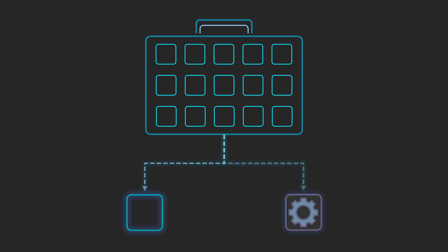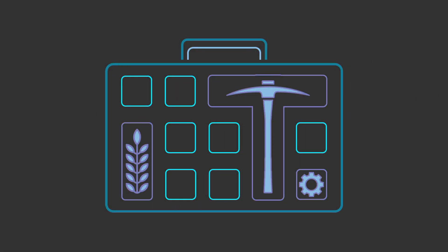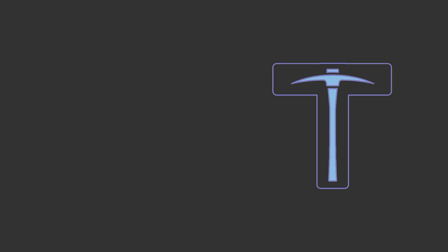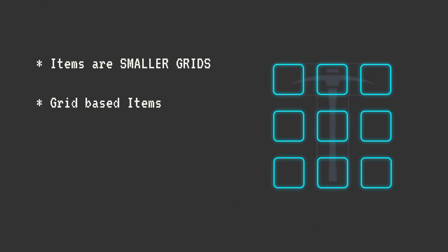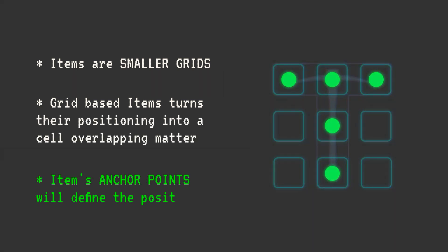Now that we have a dynamic grid, it's time to focus on items. There are a few key things to consider: not every item fits into a single cell — some might take up two, others three, and some might even have irregular shapes. On top of that, certain items can be combined, and every item must be able to rotate. Because of this, an item can also be thought of as a smaller 3D grid. This helps associate the item's occupied space with the actual inventory grid. From now on, let's call the elements of this smaller grid item anchor points.